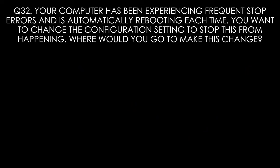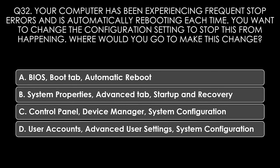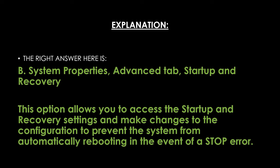Question thirty-two. Your computer has been experiencing frequent stop errors and is automatically rebooting each time. You want to change the configuration to stop this from happening. Where would you go? Options: A: BIOS boot tab then automatic reboot, B: System Properties, Advanced tab, Startup and Recovery, C: Control Panel, Device Manager, System Configuration, D: User Accounts, Advanced User Accounts, System Configuration. The right answer is B, System Properties, Advanced tab, Startup and Recovery. This allows you to access the startup and recovery settings and make changes to prevent the system from automatically rebooting on a stop error.